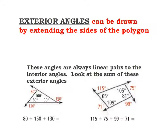What I want to look at is: once those exterior angles are drawn and we've figured out their measurements, what is their sum? Adding all three of those exterior angles ends up giving me 360. Looking at this quadrilateral — same deal, I've drawn in all the exterior angles by extending each side. Adding them up: 115 plus 75 plus 99 plus 71 actually ends up equaling 360 again. And that's always the case — it could be a triangle, a quadrilateral, a heptagon — the exterior angles will always add up to 360.